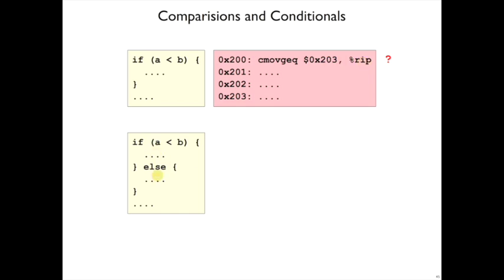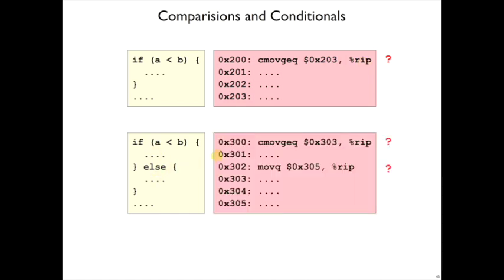Similarly, if we have an if and an else, then we might do something like this. We might say, OK, if a is greater than b, we want to jump down to the else. So we conditionally move address hex 303 to jump down to the else position, if a is greater than b.